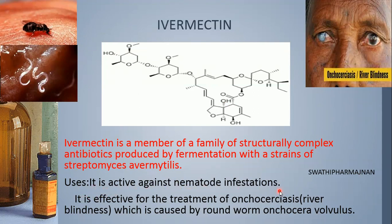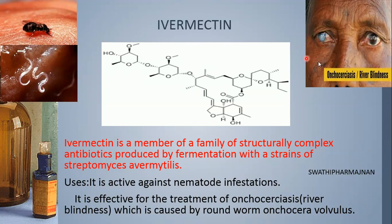All types of nematode infestations can be treated by ivermectin. It is effective for the treatment of onchocerciasis. Onchocerciasis is also called river blindness, which is caused by the roundworm Onchocerca volvulus. This causes the disease river blindness, which affects the eye of the patient.